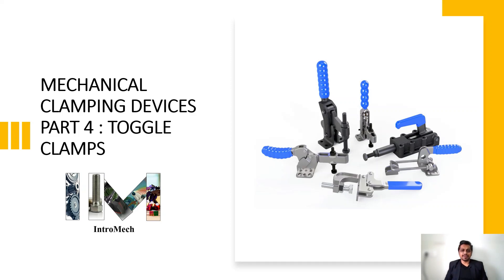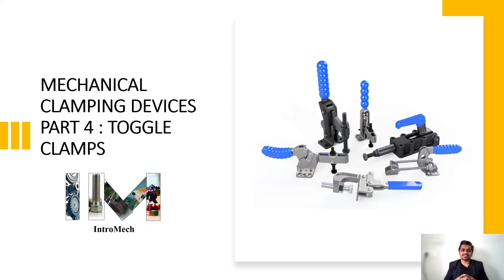Hello and welcome to our channel Intro Mag, where we discuss basic mechanical engineering concepts. We have started a new series regarding fixture designing and the basics of fixture designing. Clamping is one of the important parameters in fixturing, and we can clamp the job with different mechanical or electrical devices. Today we will see the toggle clamps, which are the most widely used mechanical clamps in industry.